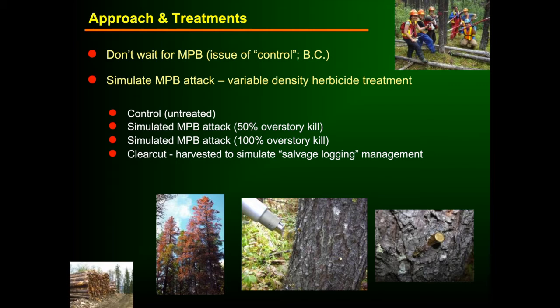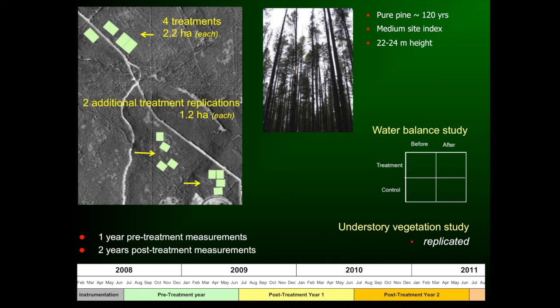So trying to learn from their experience, we decided we were not going to wait for the beetle to do this for us. We would try to simulate the canopy scale effects of mountain pine beetle by applying herbicide to emulate those effects — kill the trees in a way that emulates what mountain pine beetle does. Our approach was to look at a couple of different levels of attack: a 100% attack where we kill everything, a 50% attack simulating a lighter kill using a salt-and-pepper approach of every other tree, some untreated reference stands, and some harvested areas to compare in the context of salvage harvest.